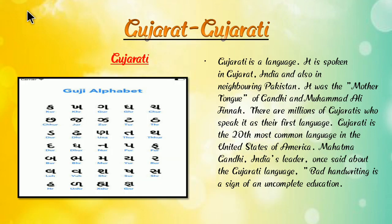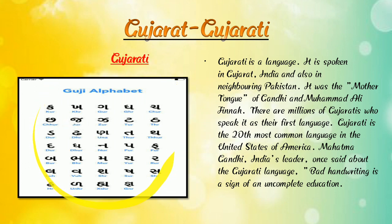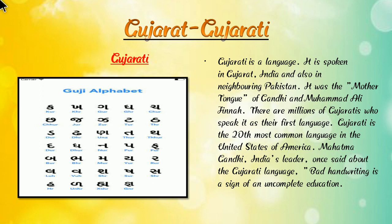The next language is Gujarati — Gujarat in Gujarati. Here we can see the alphabet of Gujarati language. Gujarati is the language spoken in Gujarat. In our country, Gujarati is spoken in India and also in neighboring Pakistan.